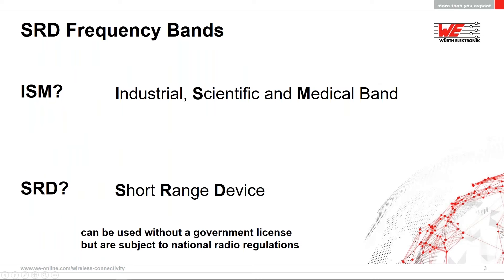Let's start with SRD frequency bands. ISM stands for industrial, scientific, and medical, and SRD for short range device. These bands are available for use without a government license, but they are subject to national radio regulations depending on where you are — Europe, the Americas, Asia, Japan, or Canada — all have different regulations. These are short range devices covering a few tens to hundreds of meters, and for that reason we have a number of restrictions as well.